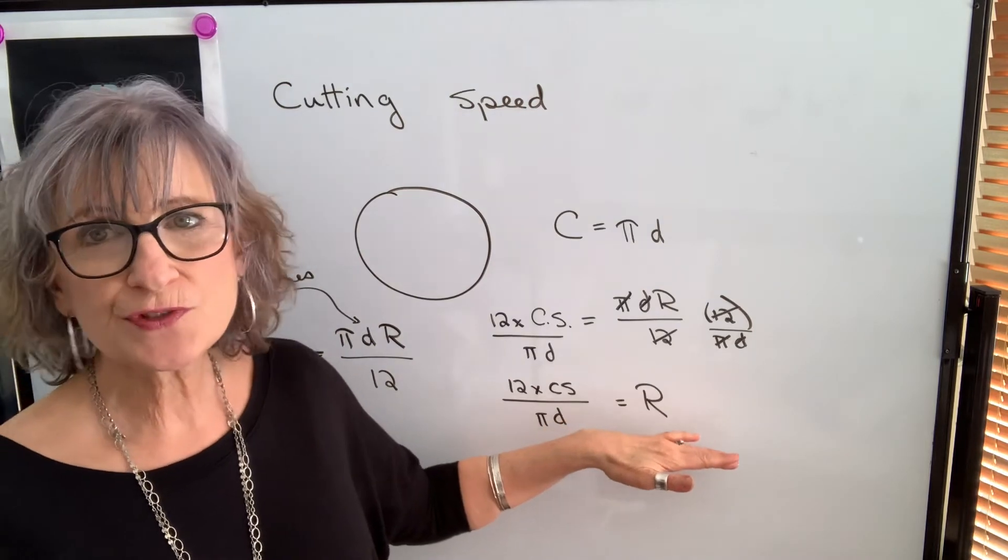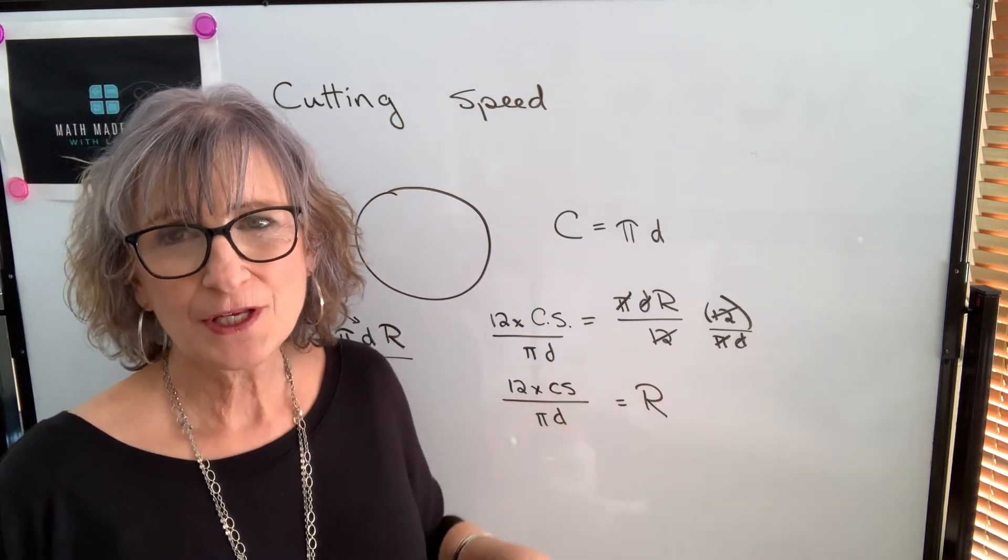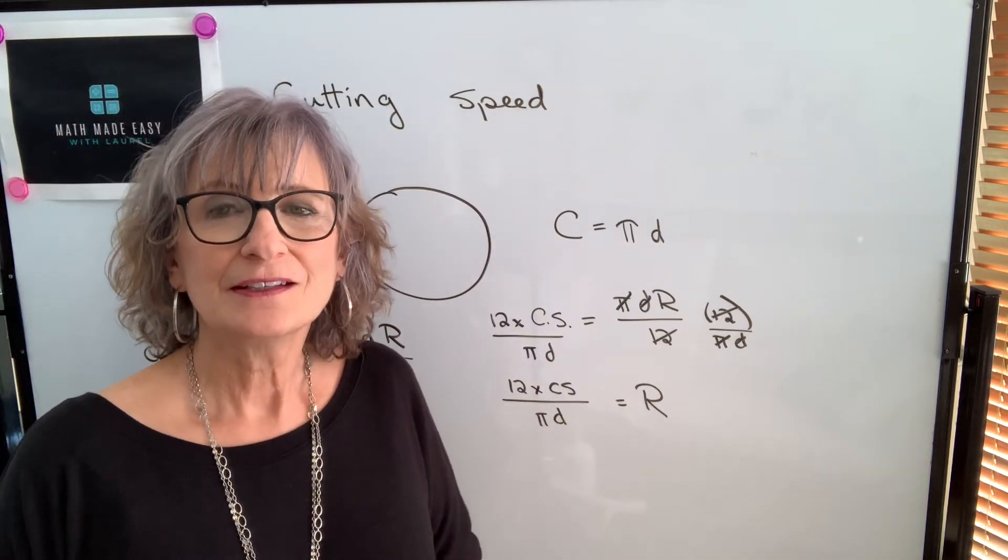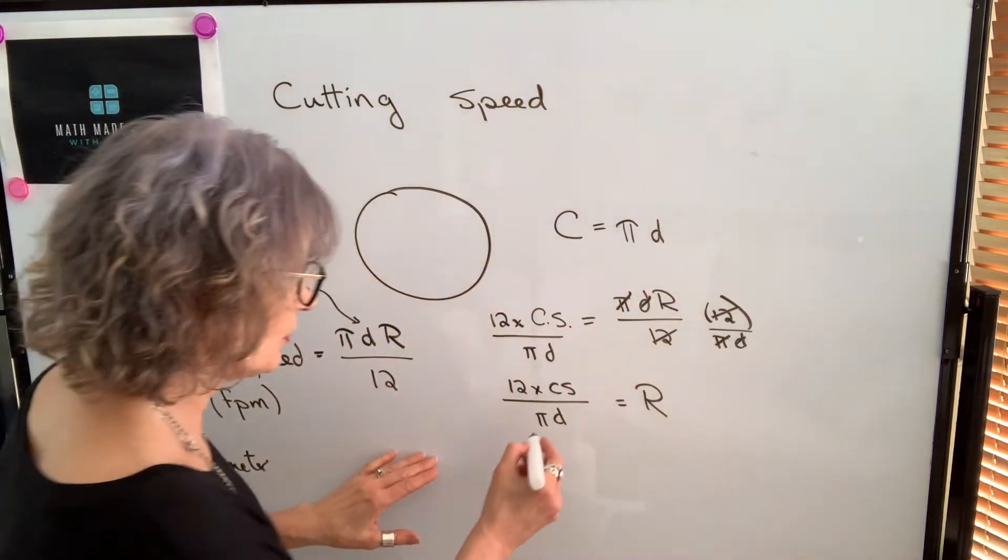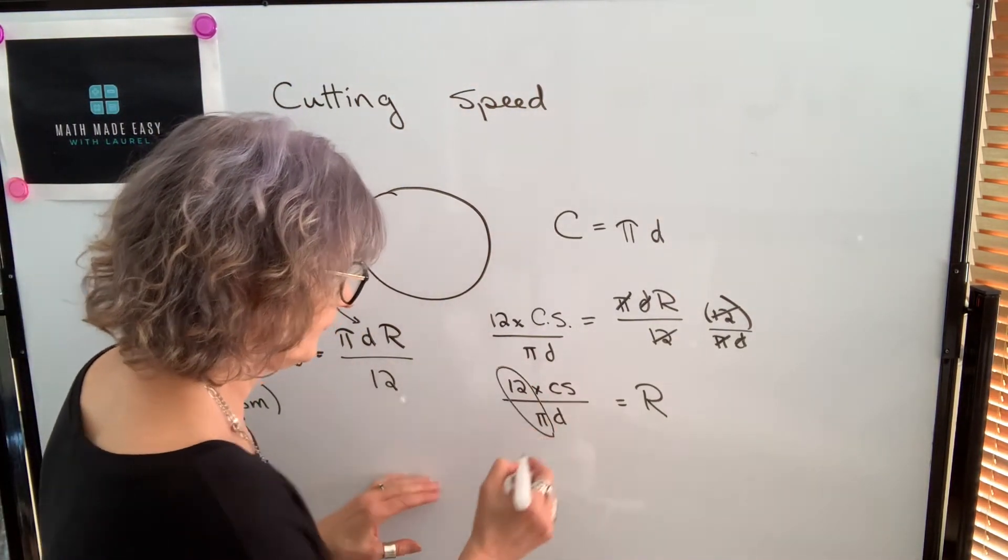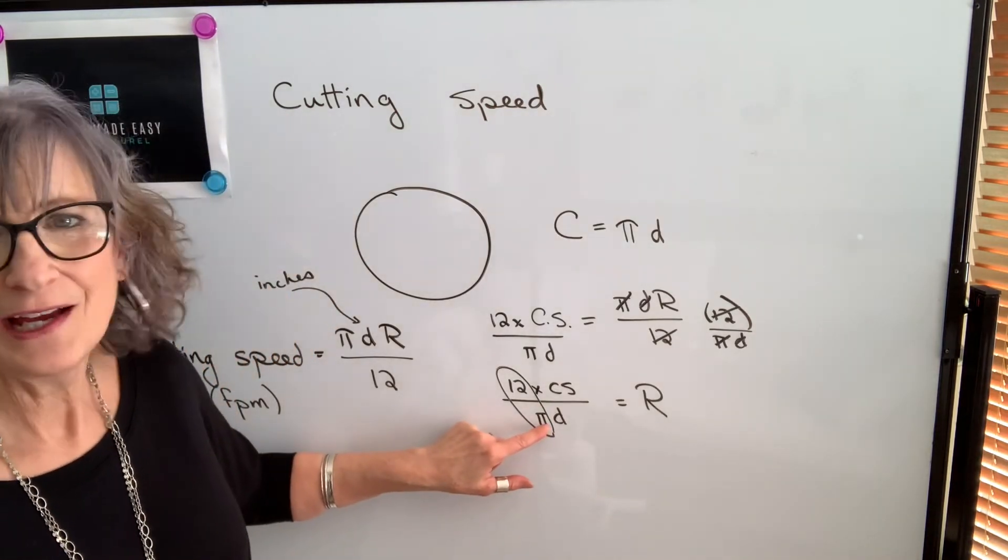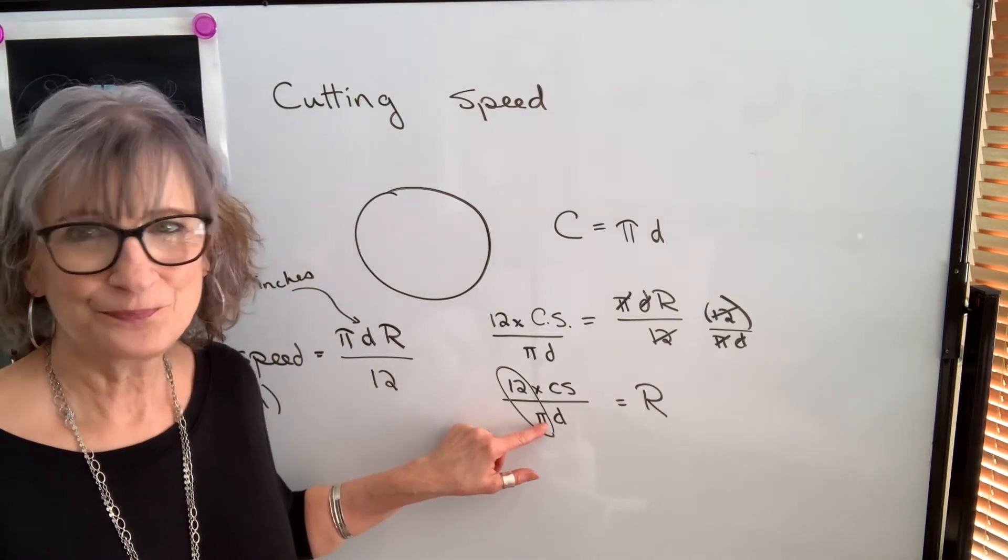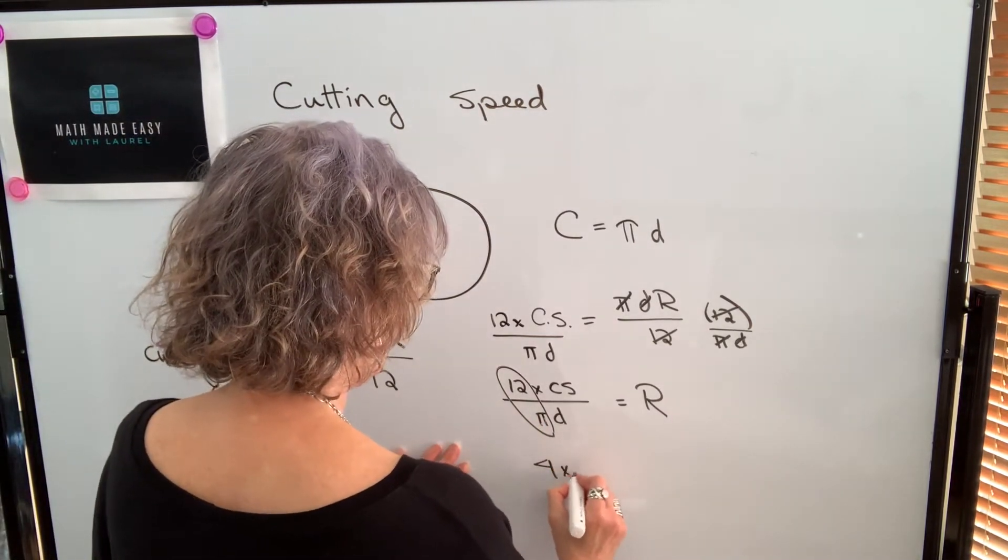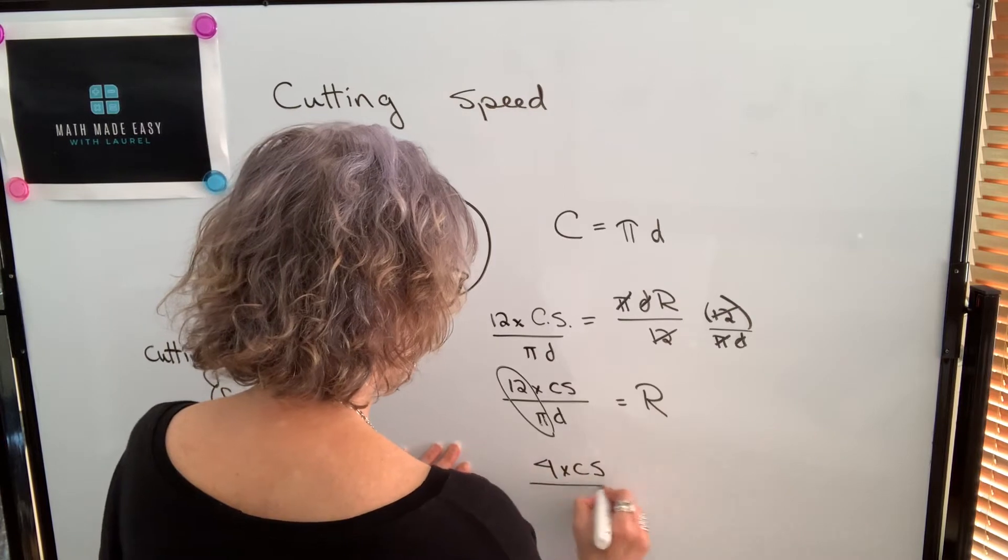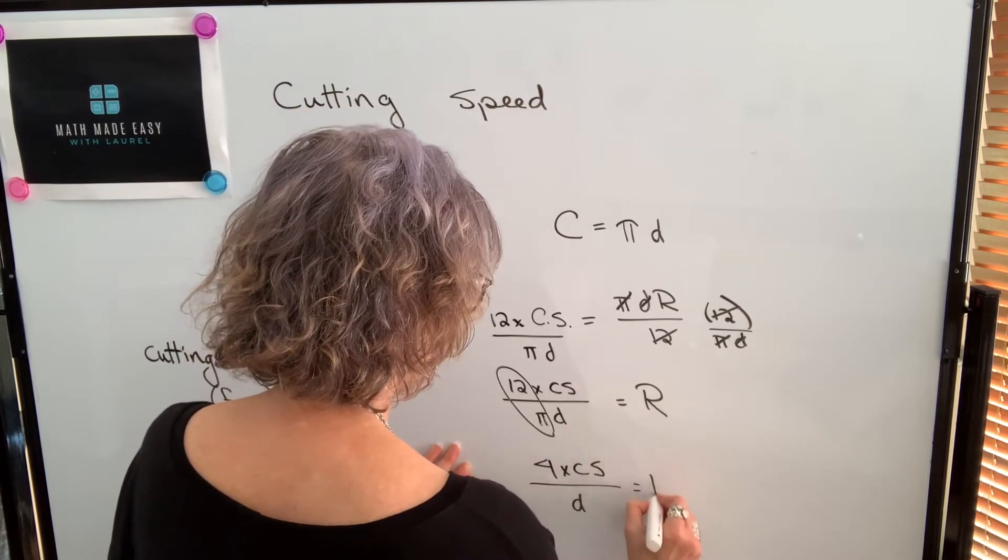You could use this formula to find RPM, but in machining, what's typically done is this number is simplified. π is rounded off to a 3, 12 divided by 3 is a 4. So the formula you will probably see is 4 times the cutting speed divided by the diameter.